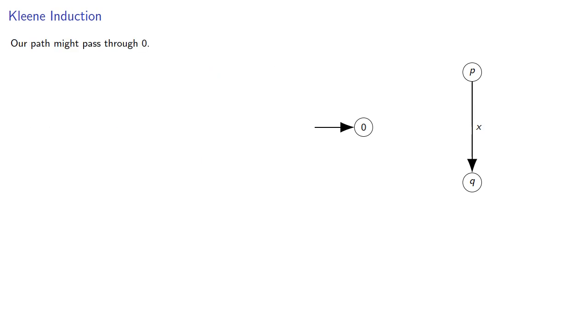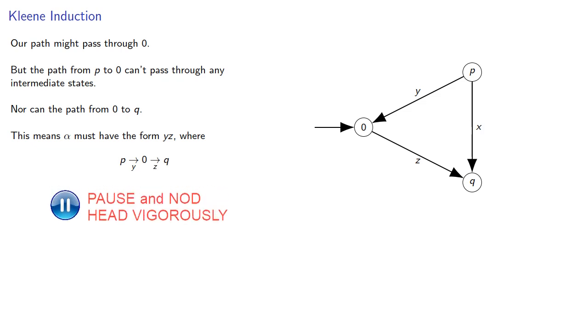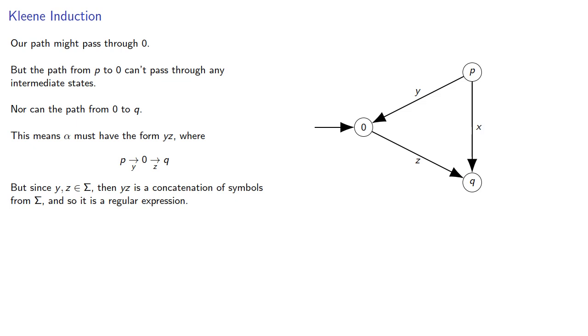Next, our path might pass through the initial state zero. But the path from p to zero can't pass through any intermediate states. Nor can the path from zero to q. This means that alpha must have the form YZ where Y takes us to zero and Z takes us on to q. But since Y and Z are individual expressions, then YZ is a concatenation of symbols from sigma, and so it's a regular expression as well.